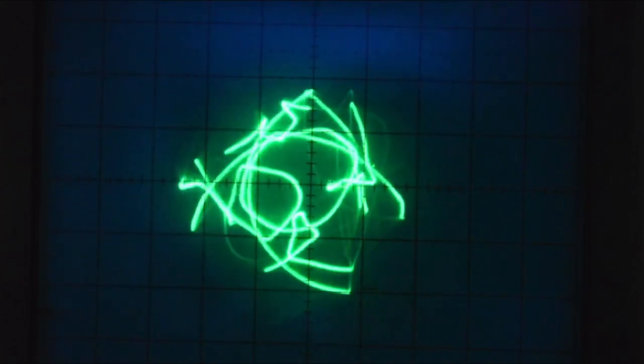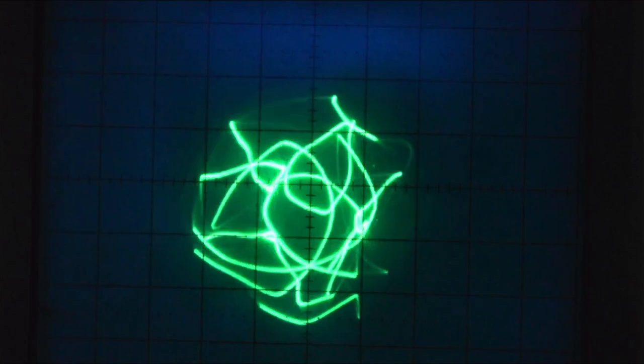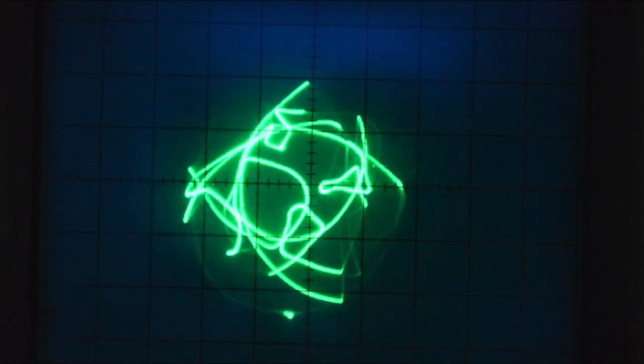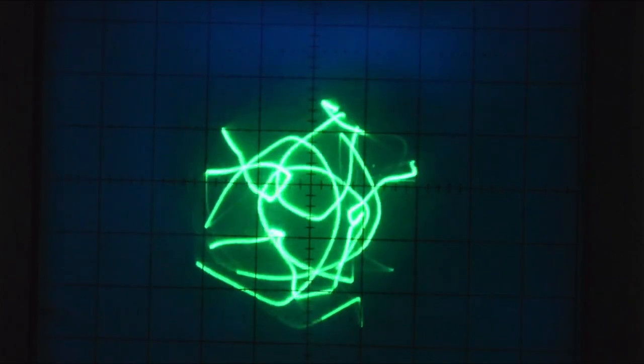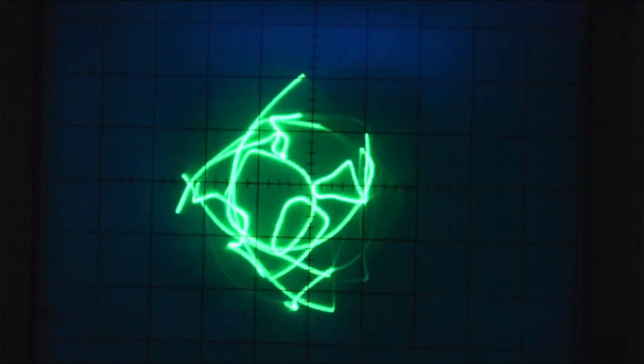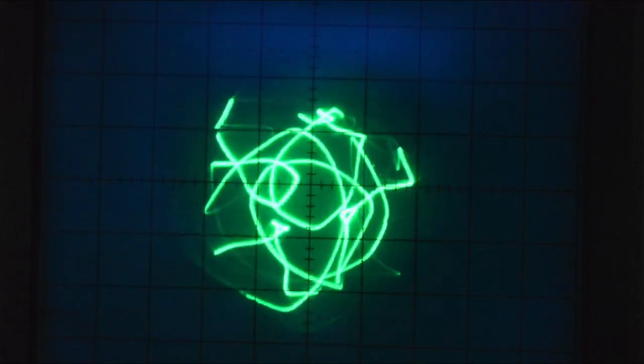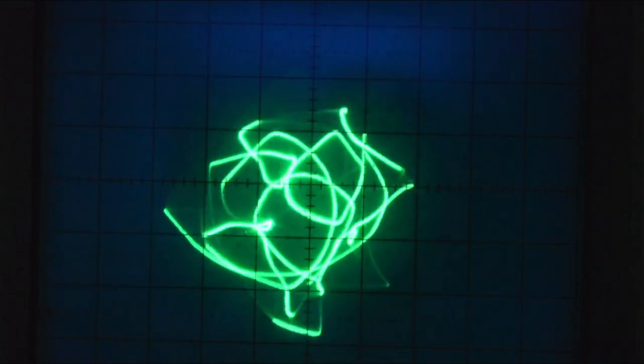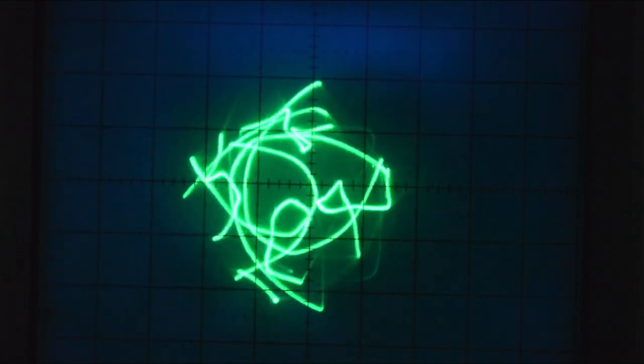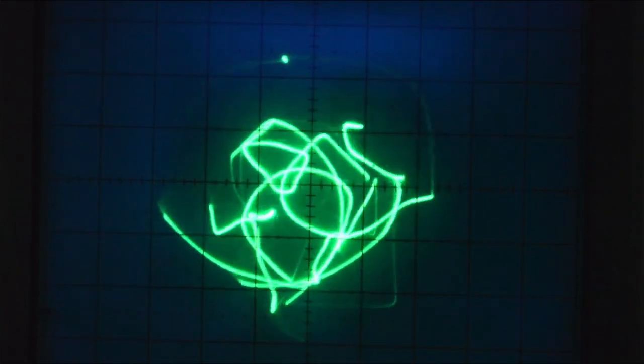Right, so now I have it so that the modulation LFO is also slightly close in frequency to the other oscillators, or at least it's close to a harmonic. And that makes it so that we get this really slowly evolving shape. It sort of looks like, you know, a spider web that's kind of moving or something.